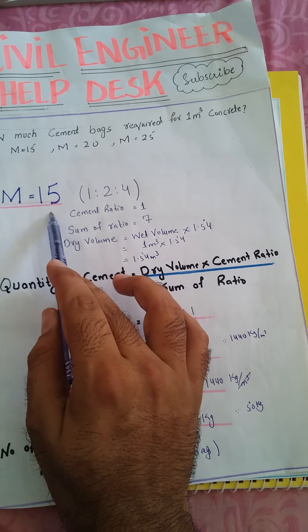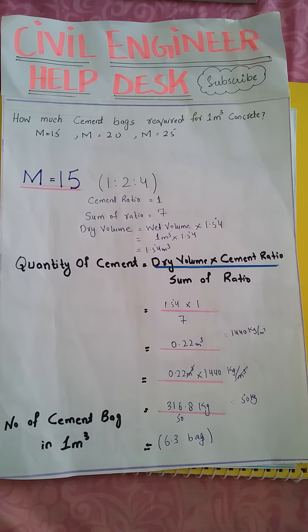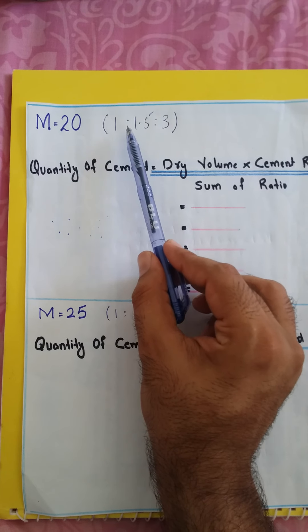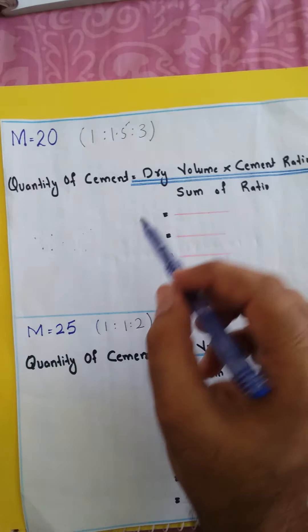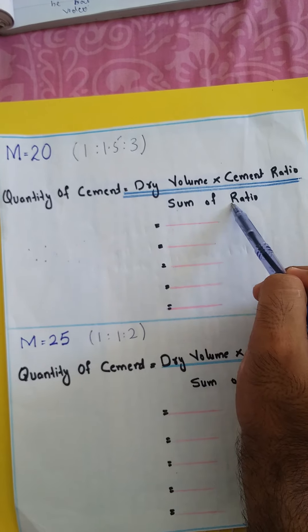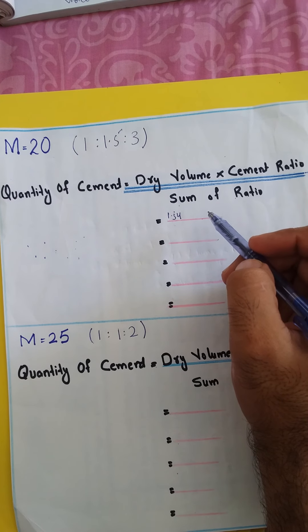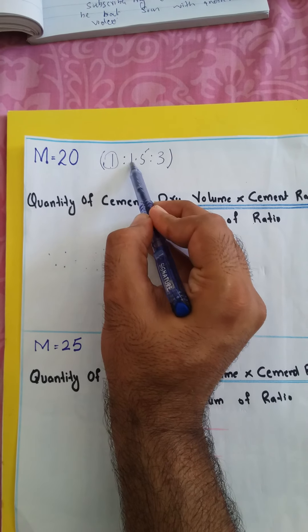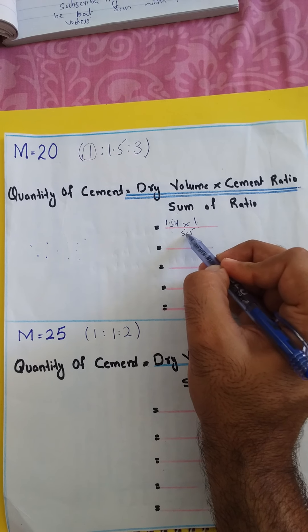For grade M15 and 1 cubic meter of concrete, we require 6.3 bags, or you can say 7 bags. Now we will work for M20. Grade M20 means a ratio of 1:1.5:3. The formula remains the same: quantity of cement equals dry volume multiplied by cement ratio divided by sum of ratio. Dry volume is 1.54, cement ratio is 1, and sum of ratio is 1 plus 1.5 plus 3, which equals 5.5.